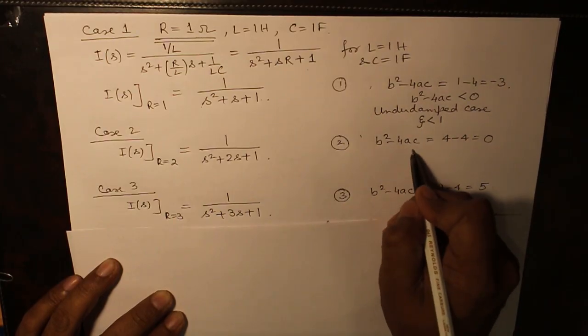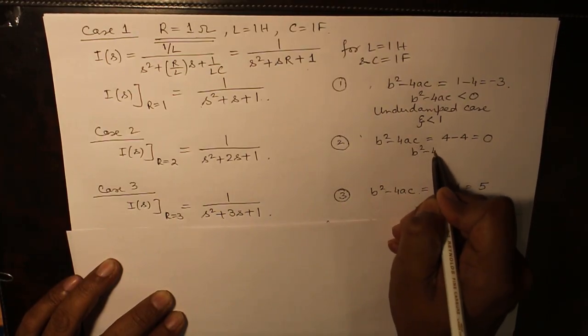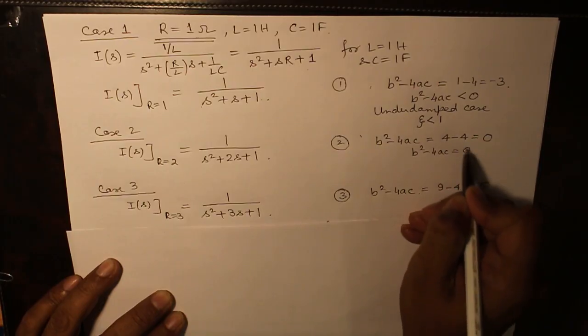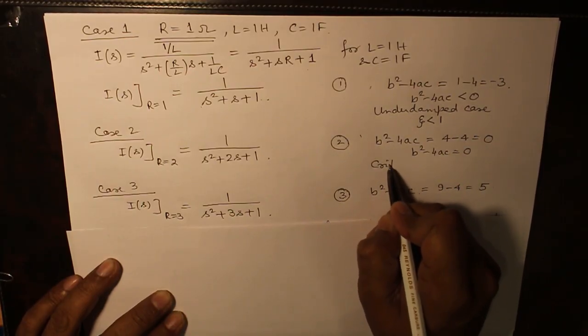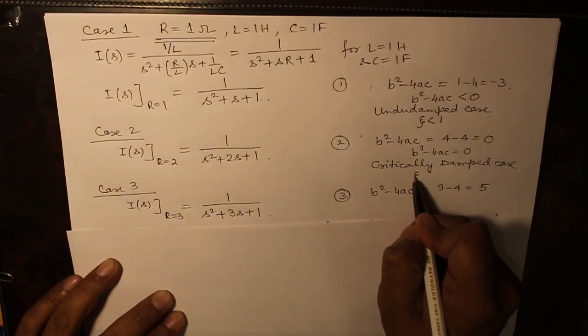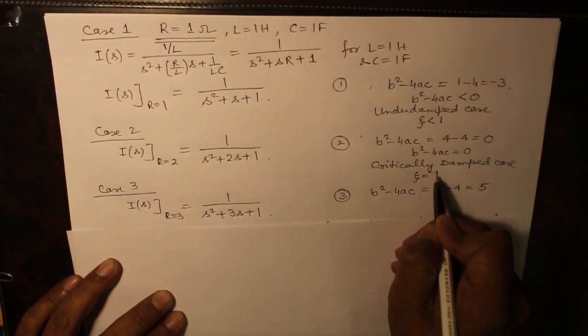B² minus 4AC is equal to 0. It means critically damped case where zeta is equal to 1.